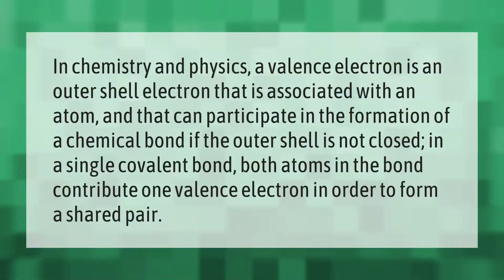In chemistry and physics, a valence electron is an outer shell electron that is associated with an atom and that can participate in the formation of a chemical bond if the outer shell is not closed. In a single covalent bond, both atoms in the bond contribute one valence electron in order to form a shared pair.